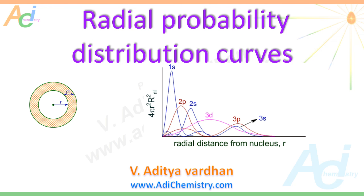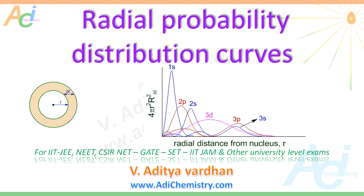Hello students, welcome. I am Aditya Vardhan from AdiChemistry.com. In this video presentation I am going to explain the Radial Probability Distribution Curves of Atomic Orbitals. It is an important concept in quantum mechanics that helps in understanding the idea of the probability of finding an electron around the nucleus.